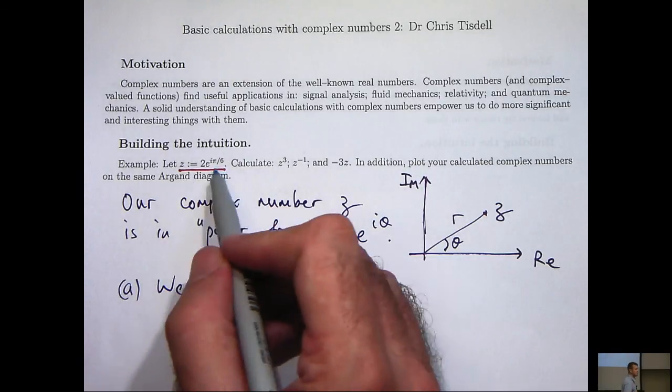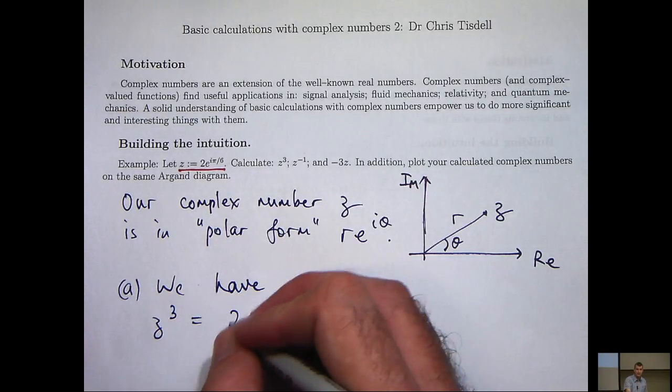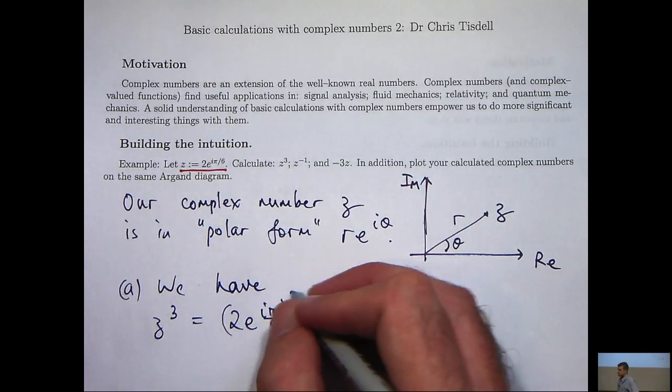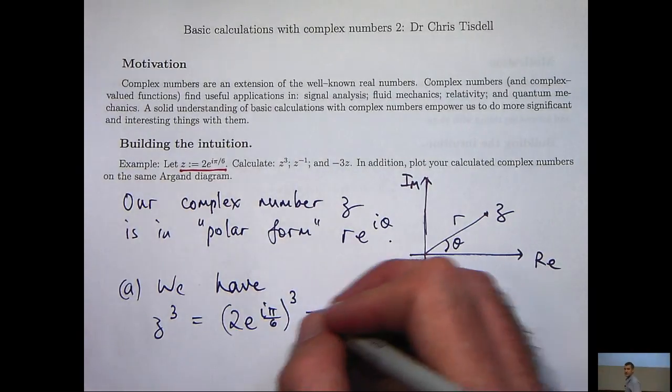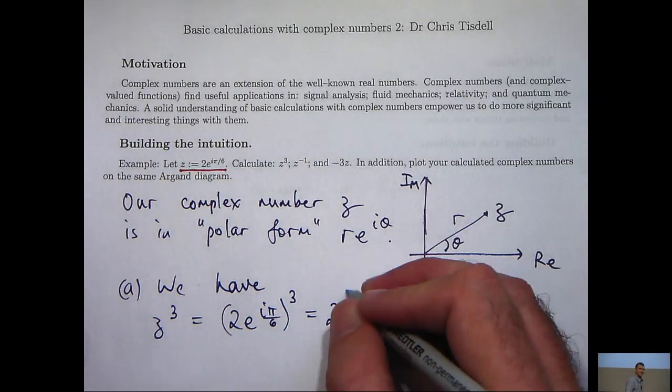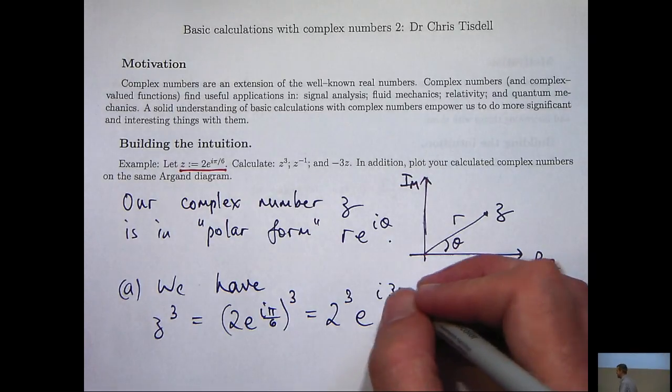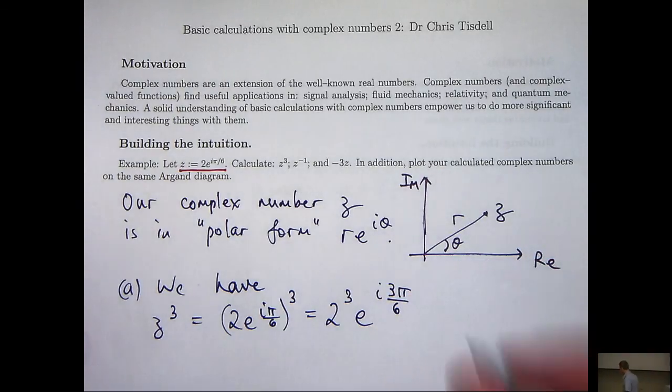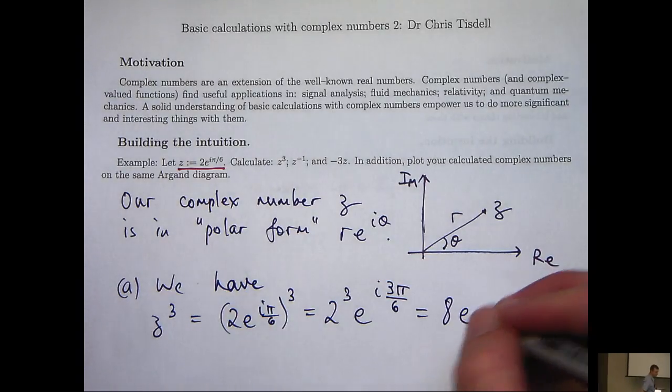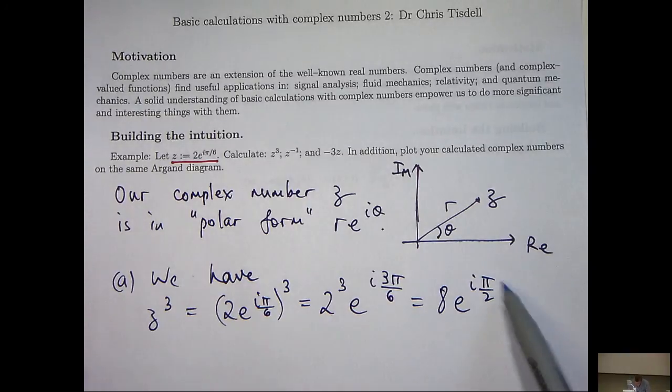Okay, so if this is our z, let's consider z³. So take our polar form and cube everything. Now, it's basically just index laws. And all I need to do now is simplify accordingly.